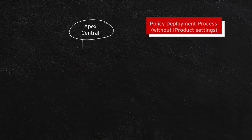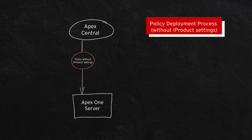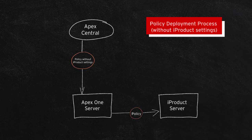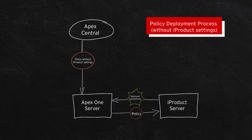Apex Central deploys the policy to the Apex One server without iProduct settings. The Apex One server will then dispatch the policies to the iProduct server. The iProduct server will directly respond to the Apex One server with a successful deployment status if the policy doesn't have any iProduct settings. The Apex One server will then send the results back to Apex Central.